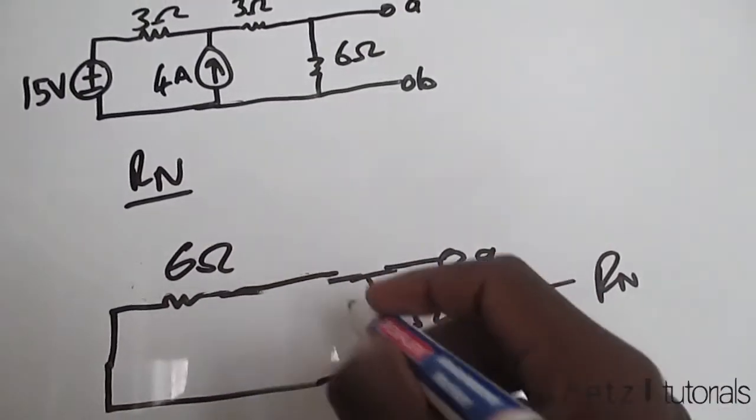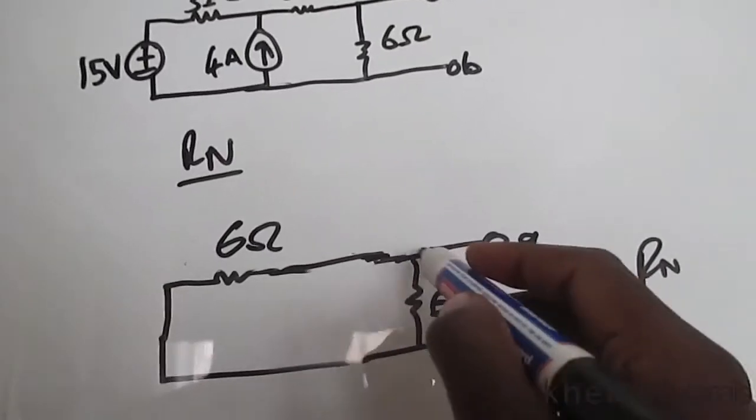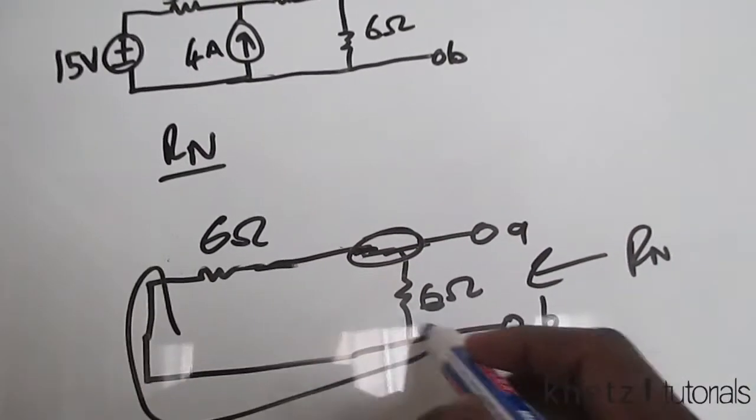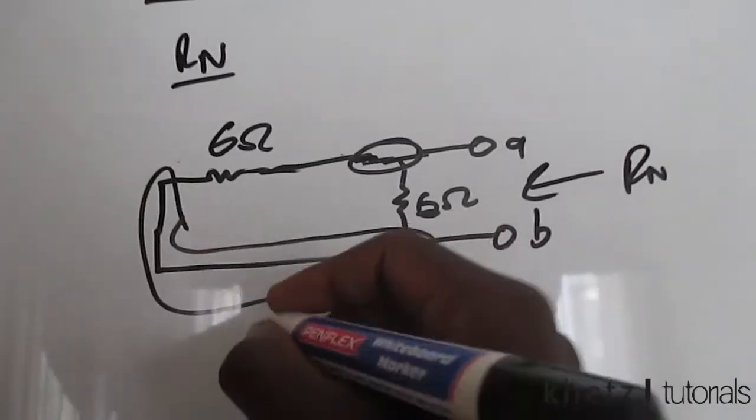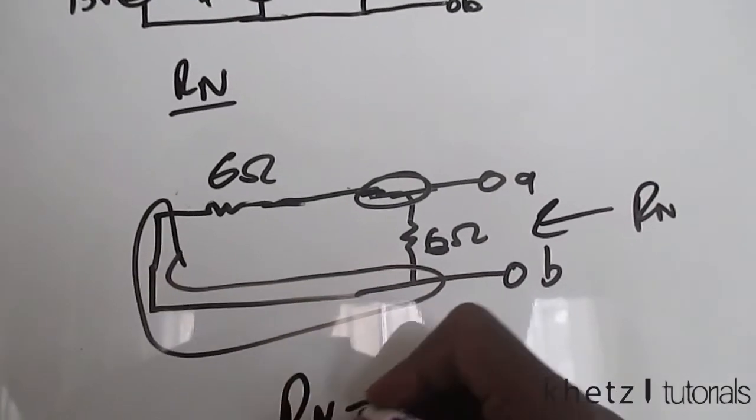And finally you'll see that this new 6 and that 6 actually share two nodes, which means they are in parallel. So the combination of that is actually the answer.